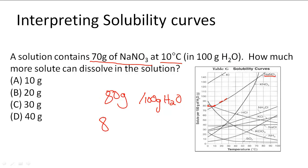So all we have to do is 80 minus 70 grams and what we get is that we could add 10 more grams of NaNO3 that could dissolve in this solution. So A is the answer to our problem.